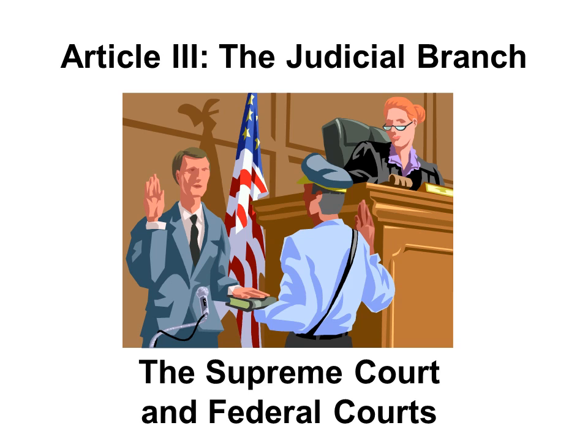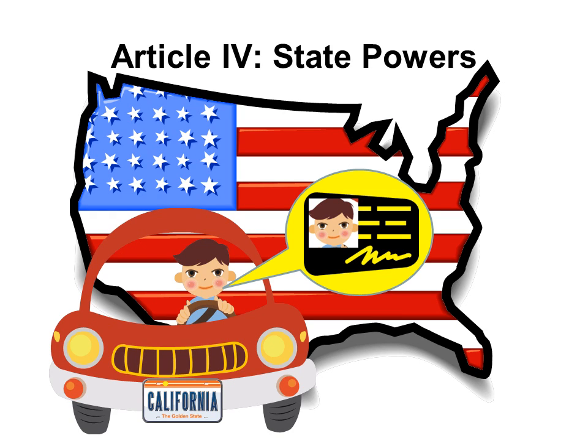Article III talks about the judicial branch. The judicial branch interprets the law. The judicial branch is composed of the Supreme Court and federal courts. Article IV talks about the powers of the states. For example, the states can give driver's licenses and make schools.